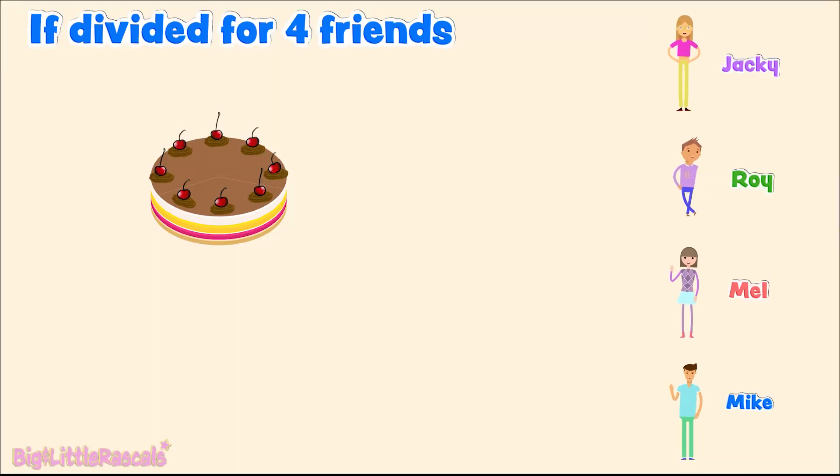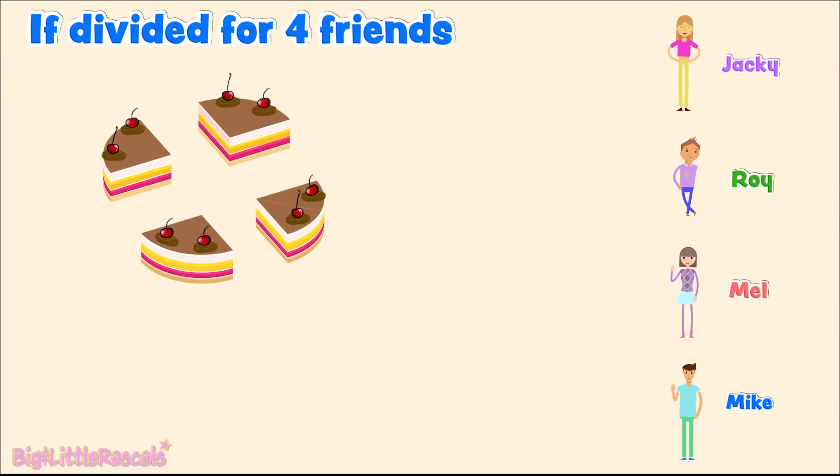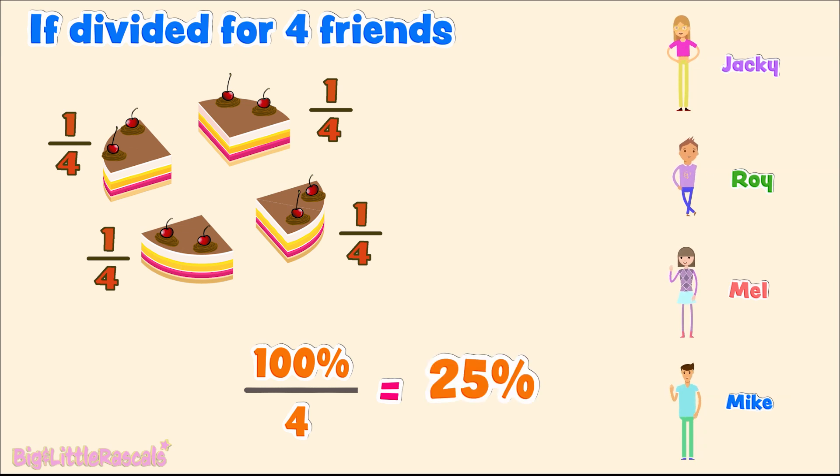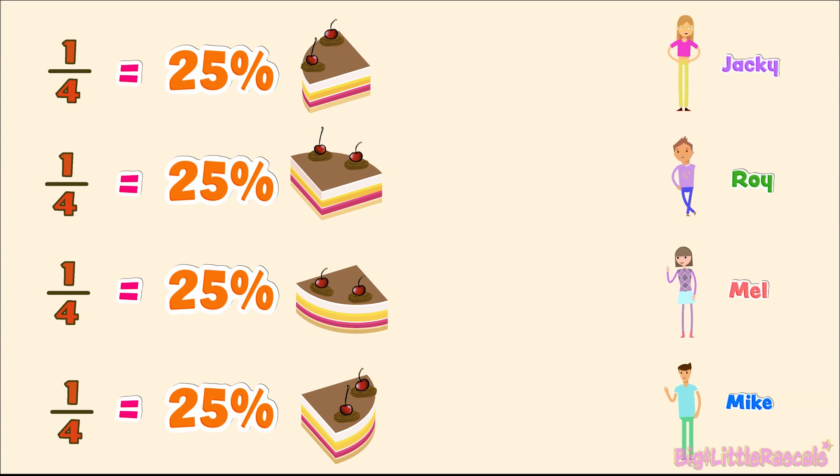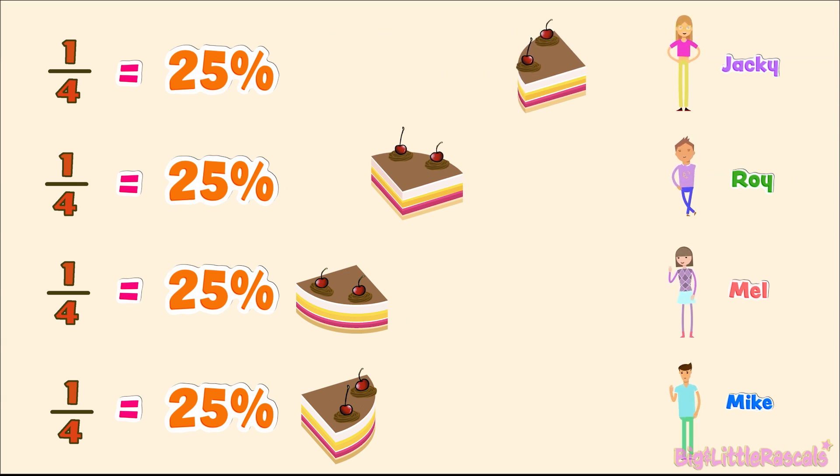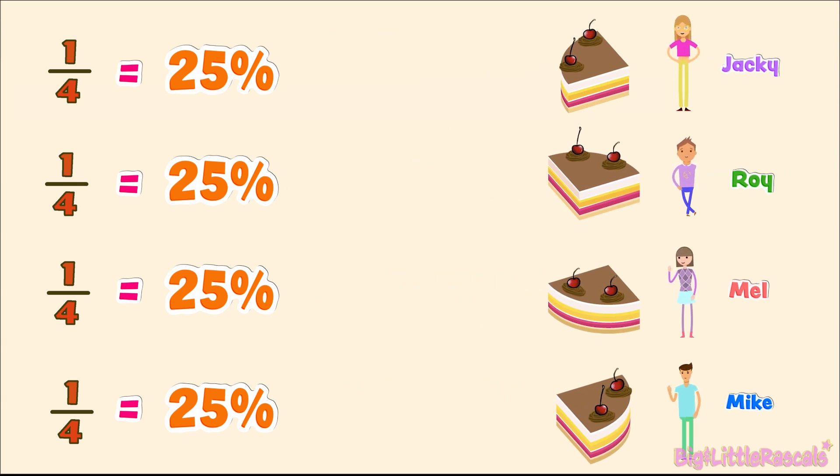But if we want to divide the cake to four friends, then we need to divide the cake into four equally. So, each friend receives a quarter of the cake. And how to say this quarter in percentage? One hundred percent divided by 4 equals to 25 percent. A quarter in percentage is 25 percent. So, each friend, Jackie, Roy, Mel, and Mike, each of them receives a quarter of the cake or 25 percent of the chocolate cake.